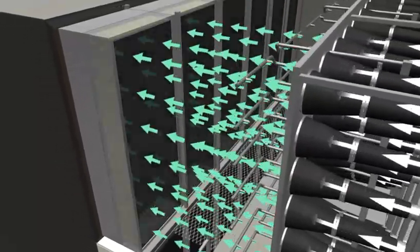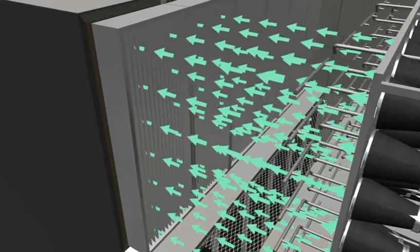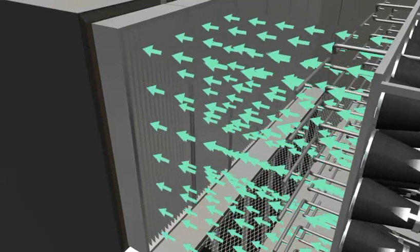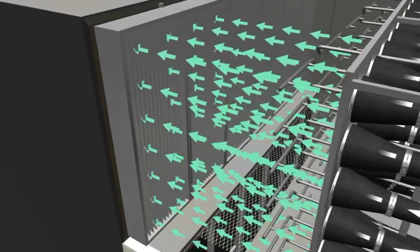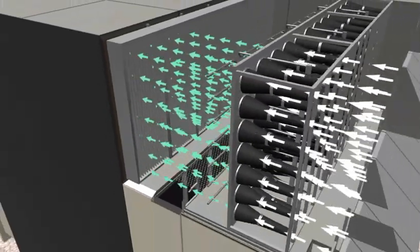Downstream of the evaporative cooling section are the mist eliminators. The mist eliminators capture loose droplets of moisture that may be carried out of the evaporative cooler media.